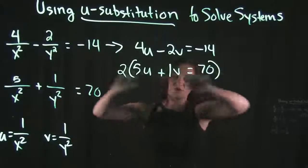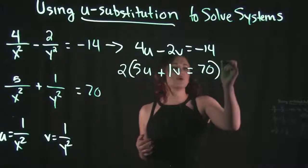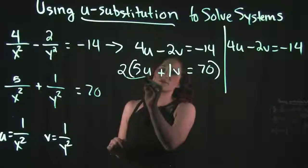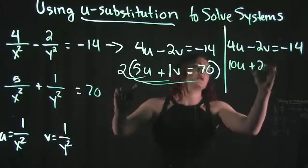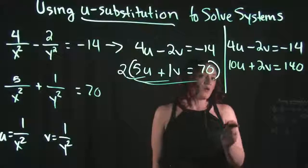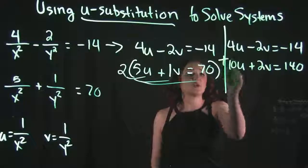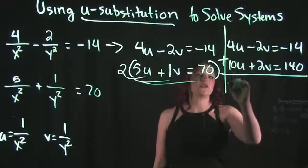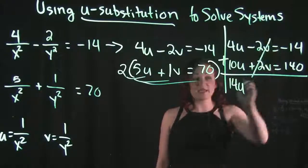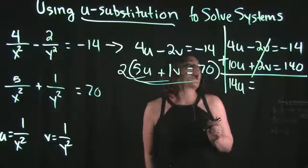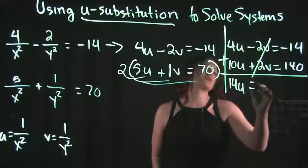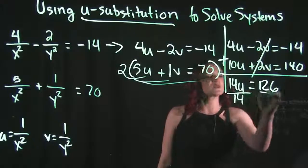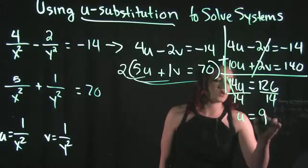Remember, I have to multiply the entire equation. So I'll rewrite: 4u minus 2v equals negative 14. Distributing the 2 to everything in the bottom equation gives 10u plus 2v equals 140. Adding the two equations together: 4u plus 10u gives 14u, negative 2v plus 2v cancels, and negative 14 plus 140 gives 126. Dividing both sides by 14 gives us u equals 9.